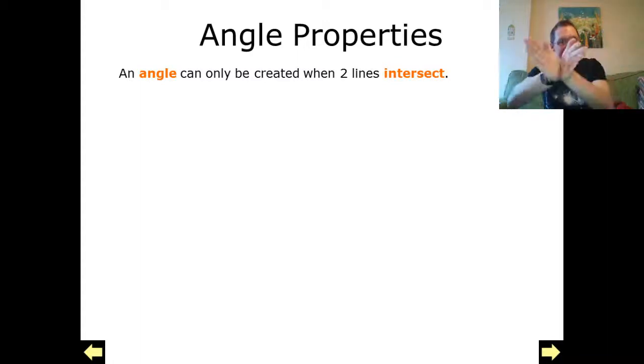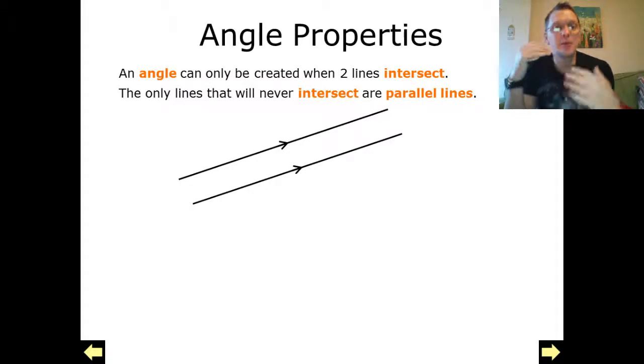So they're either meeting or they are crossing. But when we're talking about intersecting lines, two lines which will never intersect are what we call parallel lines.